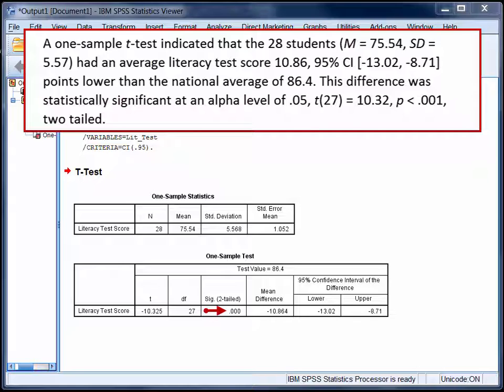Note that even though the significance value is reported as .000 by SPSS, you should use less than .001 in your reporting. Also note that if your research hypothesis was directional, you can divide the p-value in half and report the test as one-tailed.